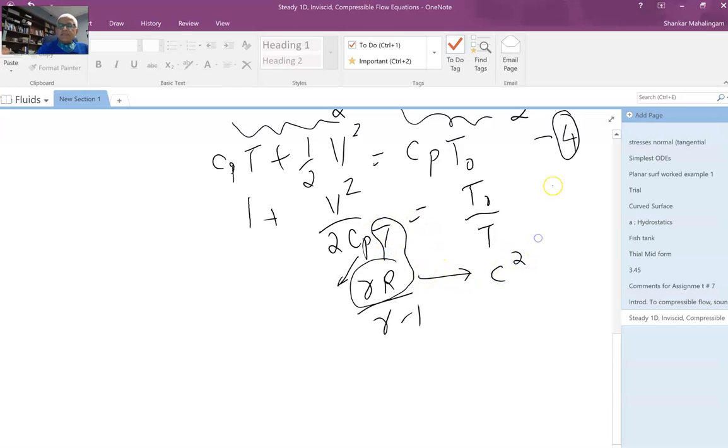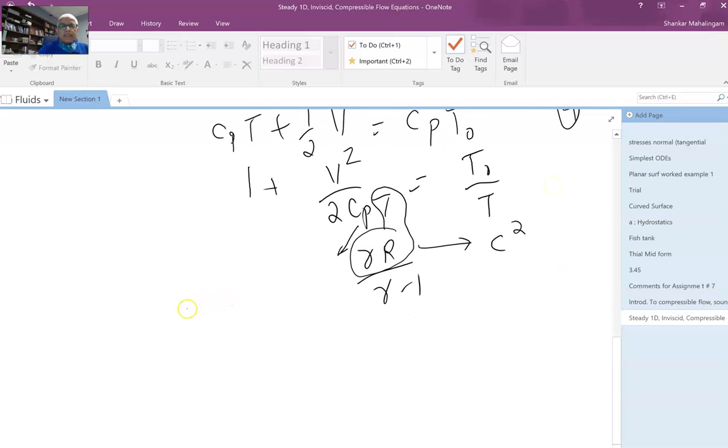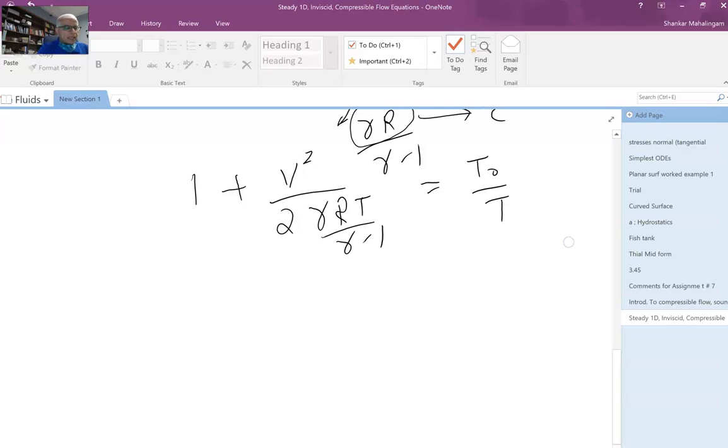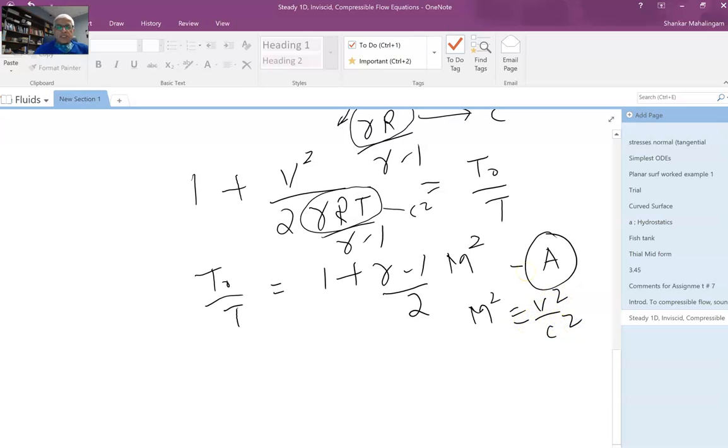Then you also notice that we get this term gamma*R*T as a result, which we know can be replaced by the speed of sound C^2. If I make that substitution, I get 1 + v^2/(2*gamma*R*T/(gamma-1)) = T0/T. I can rearrange this as T0/T = 1 + (gamma-1)/2 * (v^2/C^2), and I can replace v^2/C^2 as the square of the Mach number, equation A. Remember, Mach number squared is simply v^2/C^2 by definition. So we have a relationship between stagnation temperature and local temperature in terms of the Mach number.